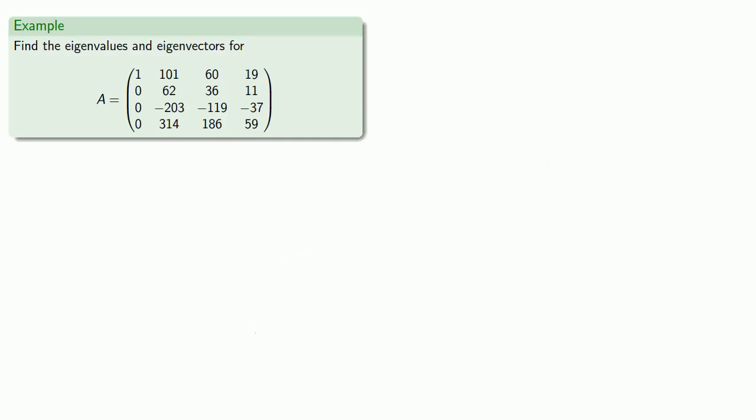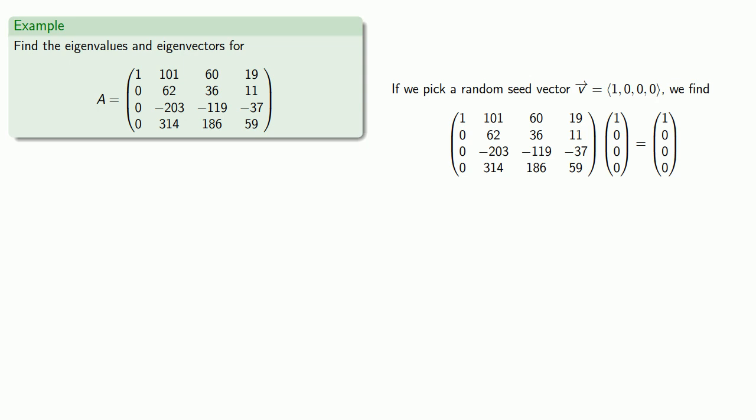So for example, let's consider this 4x4 matrix. So we'll pick a random seed vector. No need to be fancy. We'll go with (1, 0, 0, 0). And we find that if we apply the matrix to this vector, we get the same thing. And that means that (1, 0, 0, 0) is an eigenvector corresponding to lambda equals 1.